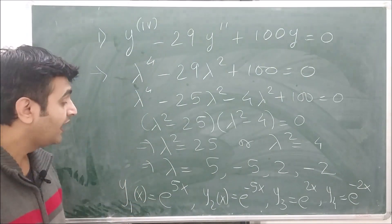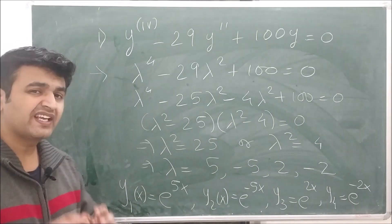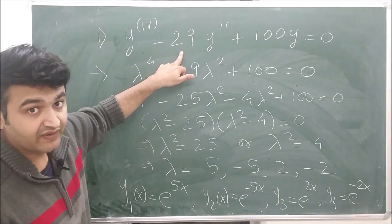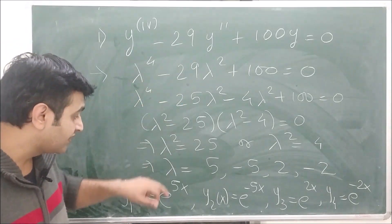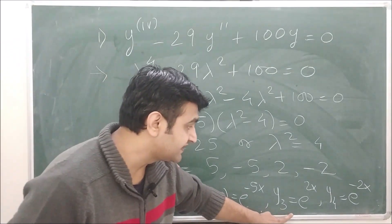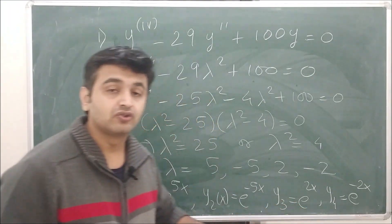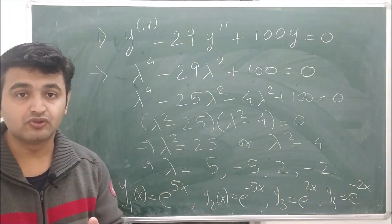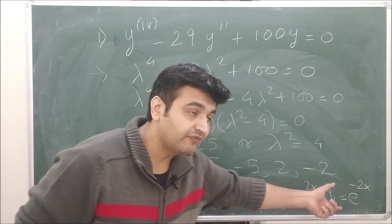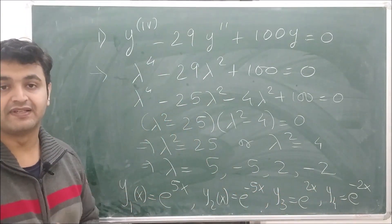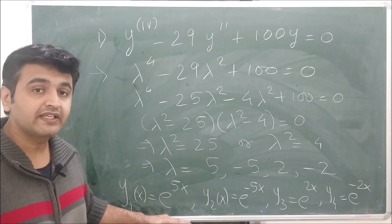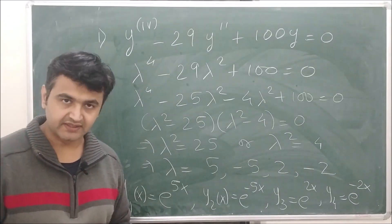Therefore the general solution y(x) of this differential equation is the linear combination c₁y₁ + c₂y₂ + c₃y₃ + c₄y₄ of those four linearly independent solutions. So when the roots are distinct, you simply take e^(λx) for each root and your job is done.